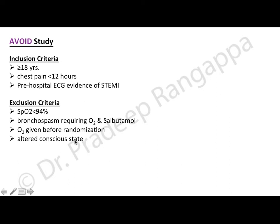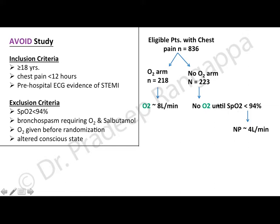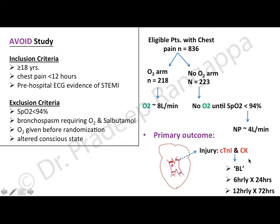The oxygen arm received 8 liters per minute of oxygen irrespective of saturation. The no-oxygen arm received oxygen only when saturation was less than 94 percent, and even then only through nasal prongs at 4 liters per minute. The primary outcome was to look at injury to the myocardial muscle by measuring cardiac troponin and CPK, measured at baseline, six-hourly for 24 hours, then twelve-hourly up to 72 hours.